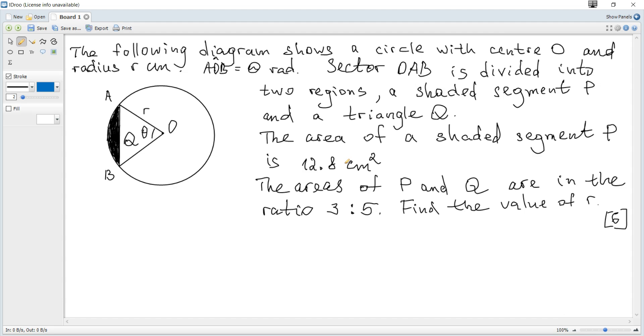The following diagram shows a circle with center O and radius R. Angle AOB is theta radians. Sector OAB is divided into two regions, a shaded segment P and a triangle Q. The area of shaded segment P is 12.8 cm squared. The areas of P and Q are in the ratio 3 to 5. Find the value of R.